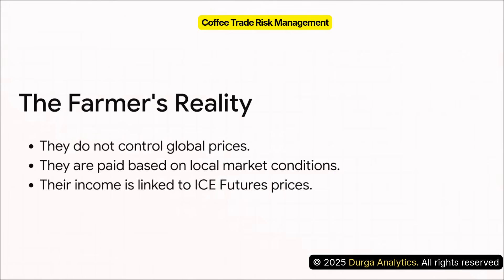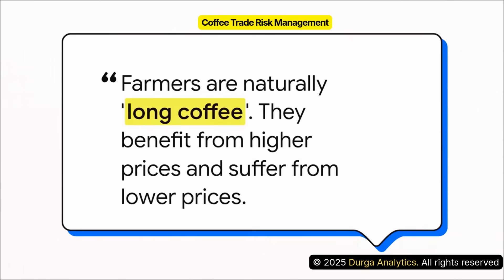These farmers are the real engine of our industry — they're cultivating and processing the physical green beans. But in the global pricing structure, they are almost universally price takers. They get paid based on local market conditions tied to a global price benchmark, like the ICE Coffee C Futures contract traded thousands of miles away — a price they have absolutely zero control over.